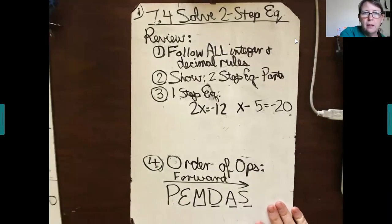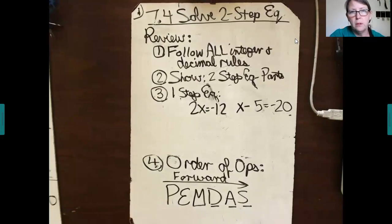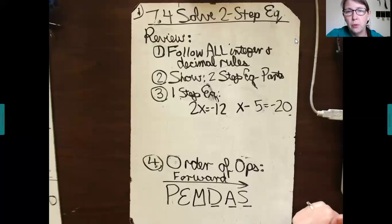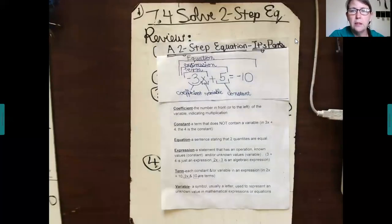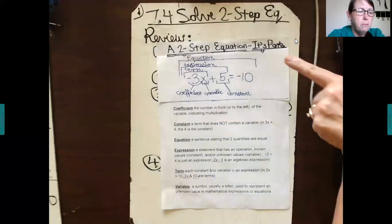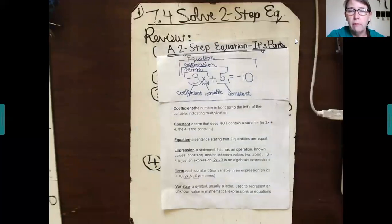Keeping in mind that up to this point we work with one-step equations. Make sure that you review these items here in order to be able to solve two-step equations. Number one, follow all integer and decimal rules. Number two, make sure you know and understand a two-step equation and its parts. Pause the video if you have not written all these definitions and this top part where it shows where the different parts are.